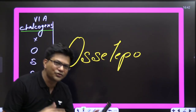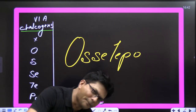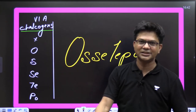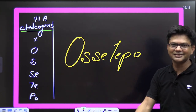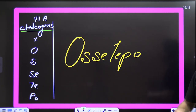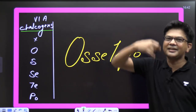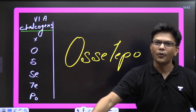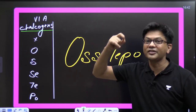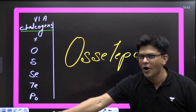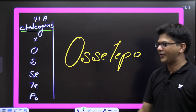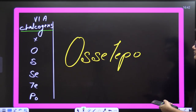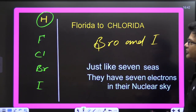Now chalcogens — the oxygen family. Remember to say TIPPO: Oxygen, Sulphur, Tellurium, Polonium. Once again: TIPPO — very good!